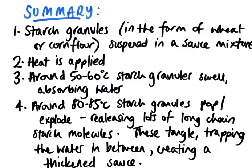So a little summary. The first stage of gelatinisation is that we have starch granules suspended in a sauce mixture. In a sweet and sour, that's where we're using corn flour; in a white or bechamel sauce, we will be using wheat flour. Those starch granules are suspended — that means if we stop stirring, they'll drop to the bottom and burn. The next stage is to keep applying heat to the sauce, warming it up.